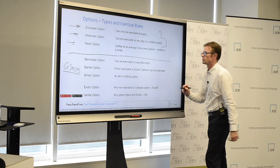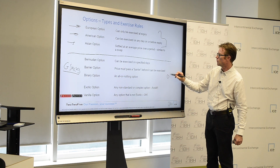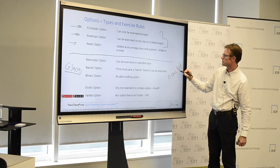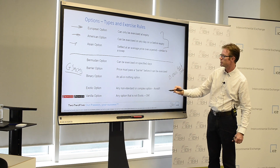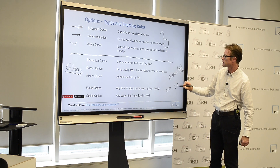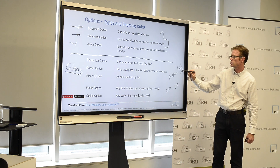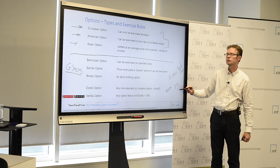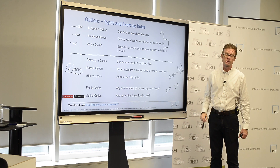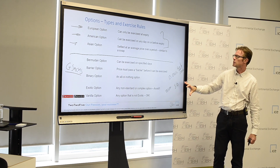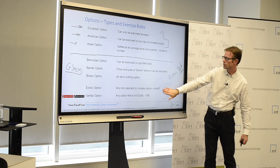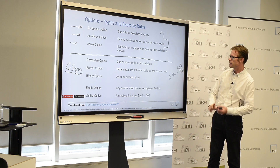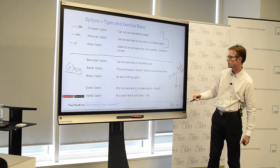A classic barrier option might say: if you buy a call at $60 in Brent — that's the strike price — there is an additional barrier level set at, say, $50. It says you have the right to be long at $60, but only if the market has gone down to $50 first and then gone back up again. So it's incredibly hard to model. A basic option is really easy to model and to know your exposure. Something like this is very, very hard.